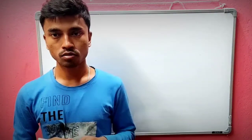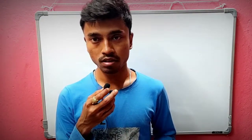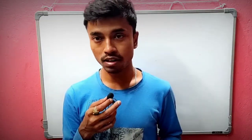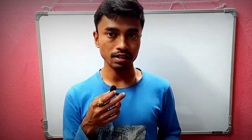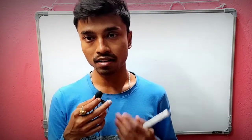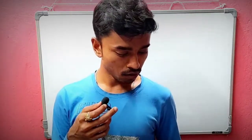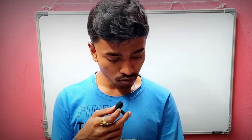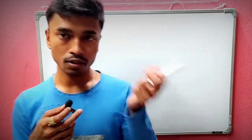Hello everyone and welcome to Mathematics Galaxy. Today we are going to discuss a group homomorphism from the group GL(2,R) to R*. GL(2,R) means all 2x2 matrices with non-zero determinant, meaning they are invertible. We're going to check today how GL(2,R) can form a group homomorphism to R*.